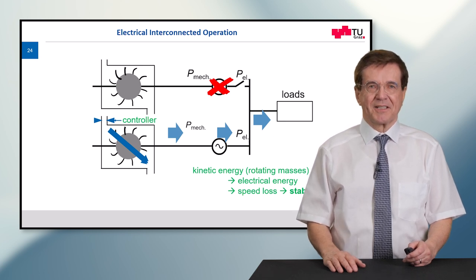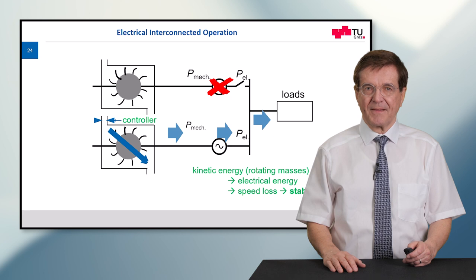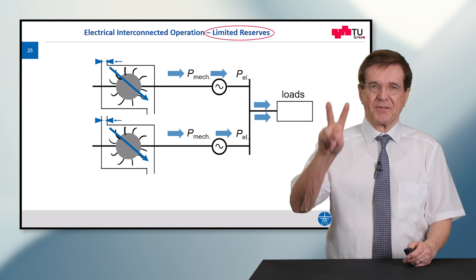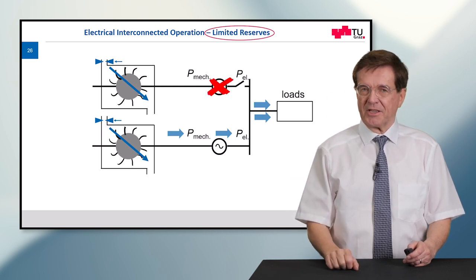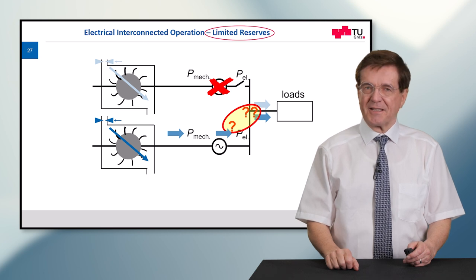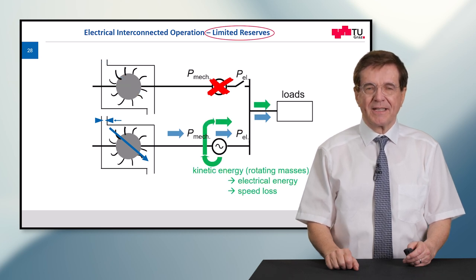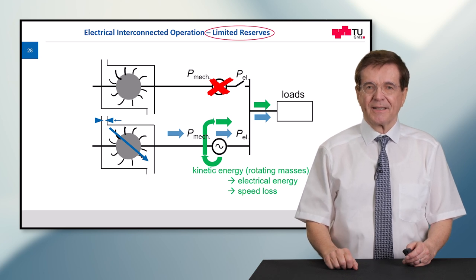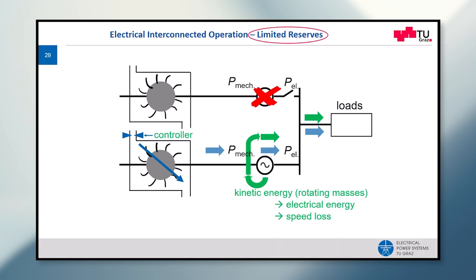Now we repeat the same process but with limited reserves. So again we have the two power plants running in parallel. One generator trips out. There is a deficit of power which is immediately recovered by the remaining generating unit, and again the speed is decreased. The controller again comes in, opens the valve.